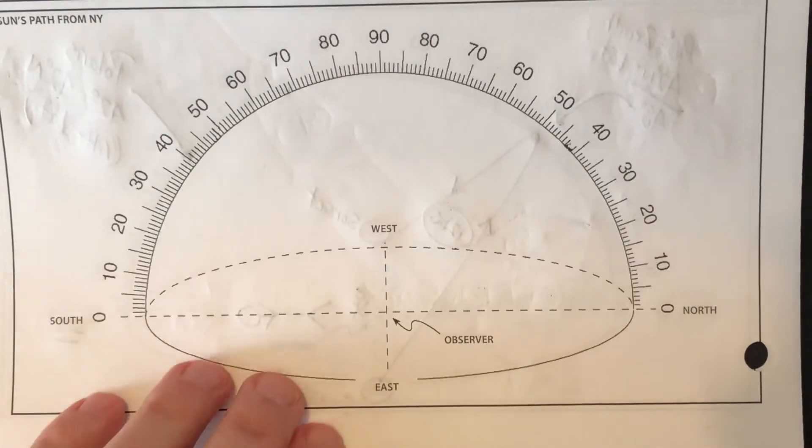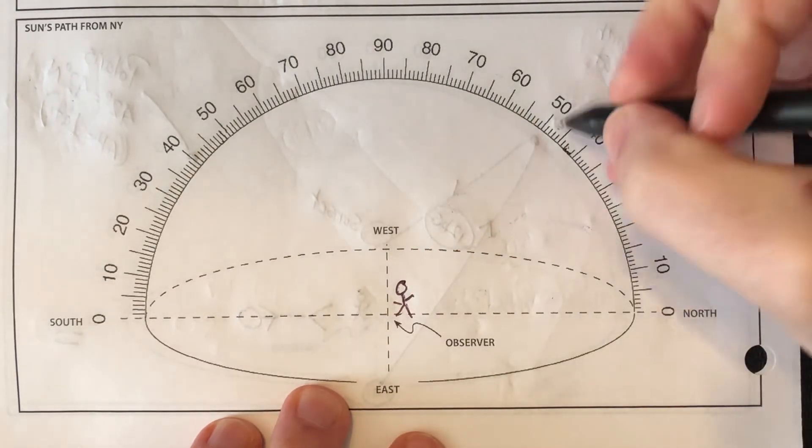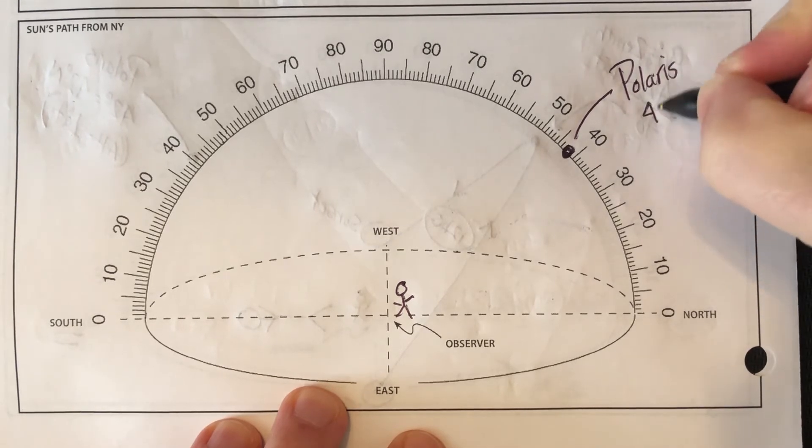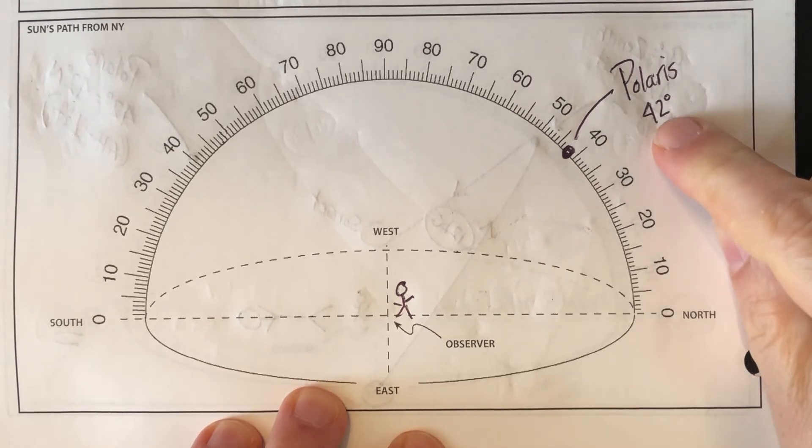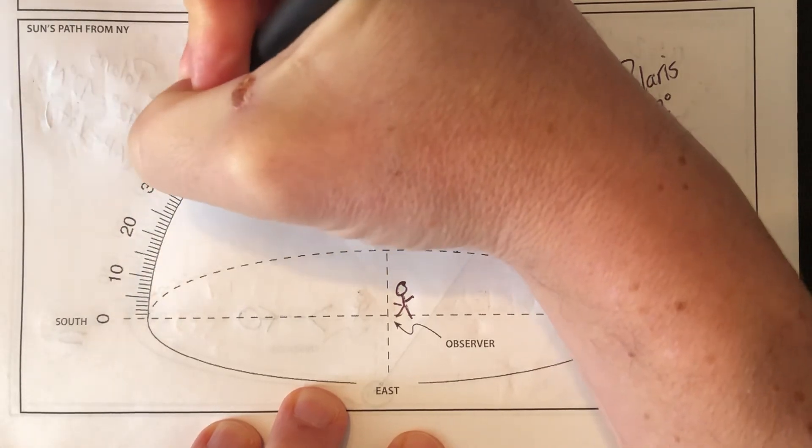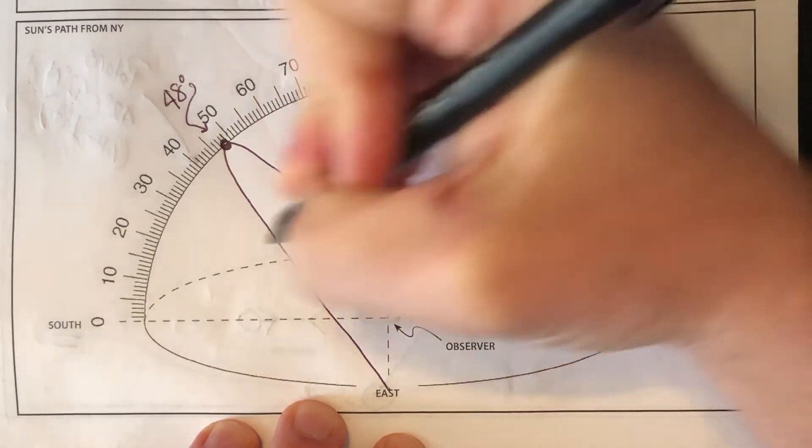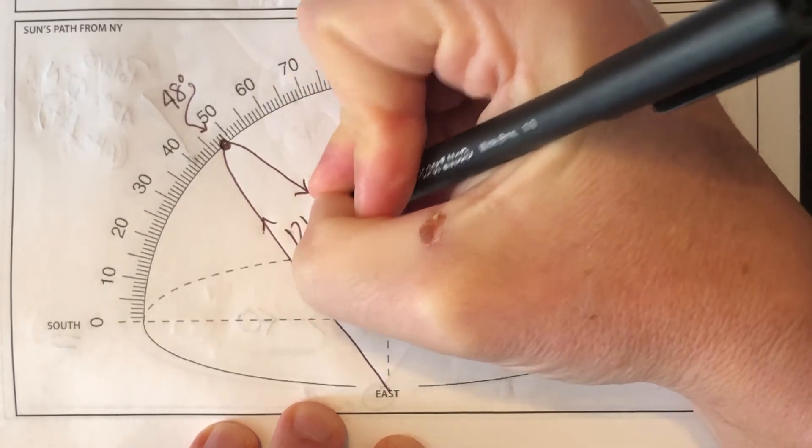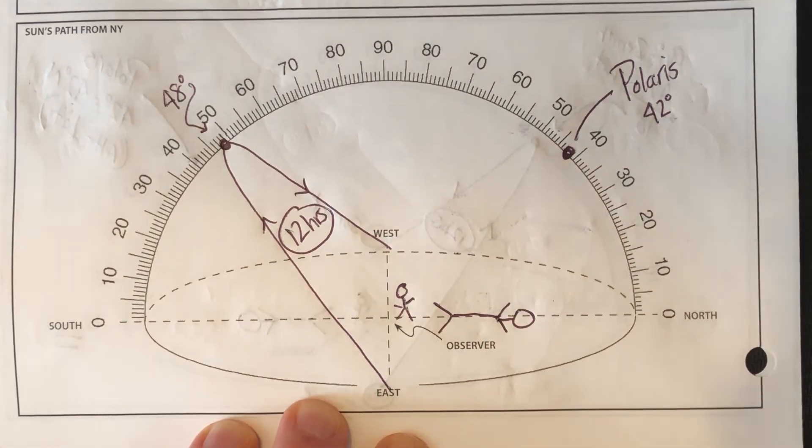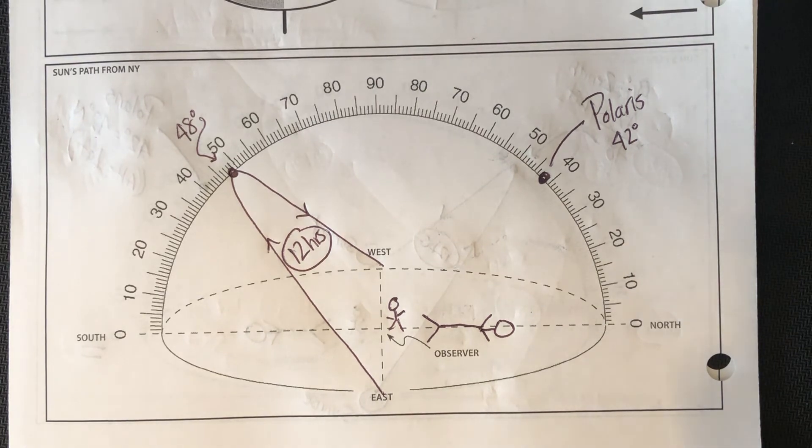Same thing with your dome. You put your observer down here. I'm not going to go into as much detail because we've just done everything you need. There's Polaris in the north, it's 42 degrees altitude of Polaris. Remember, we've calculated how to get the altitude. The altitude of the noon sun was 48 degrees right here. That's our noon sun. It's going to rise exactly east and set exactly west, and that's going to be 12 hours of daylight with a medium noon shadow for my observer.